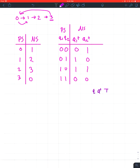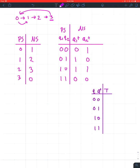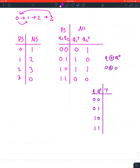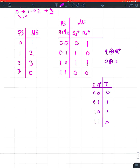For the T excitation table, the columns are Q, Q-plus, and T. The entries are: 00→T=0, 01→T=1, 10→T=1, 11→T=0. Think of it like a plus sign — T equals Q XOR Q-plus. If Q and Q-plus are both zero, XOR gives zero; if they differ it's one. So if the state is changing you put a one; if it stays the same you put a zero.